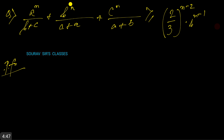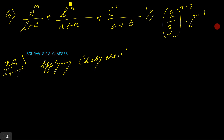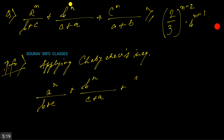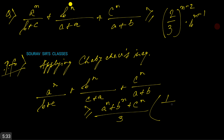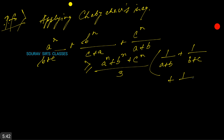First we apply Chebyshev's inequality: aⁿ/(b+c) + bⁿ/(c+a) + cⁿ/(a+b) ≥ (aⁿ + bⁿ + cⁿ)/3 · (1/(a+b) + 1/(b+c) + 1/(c+a)).